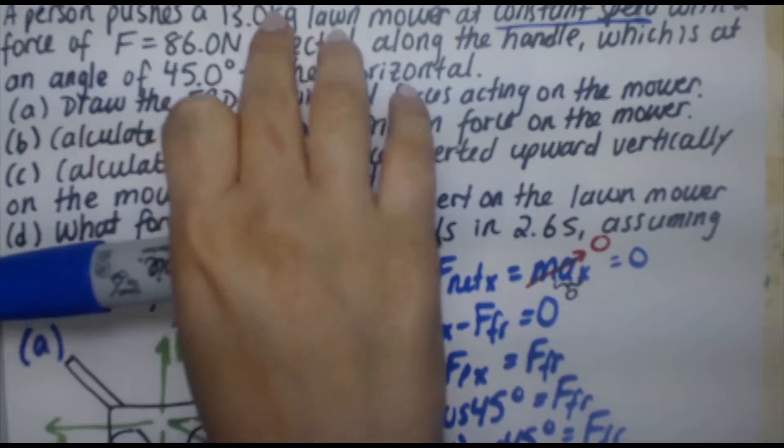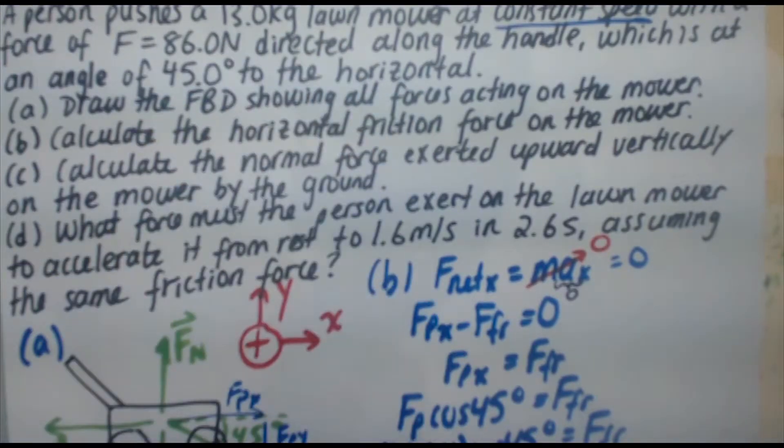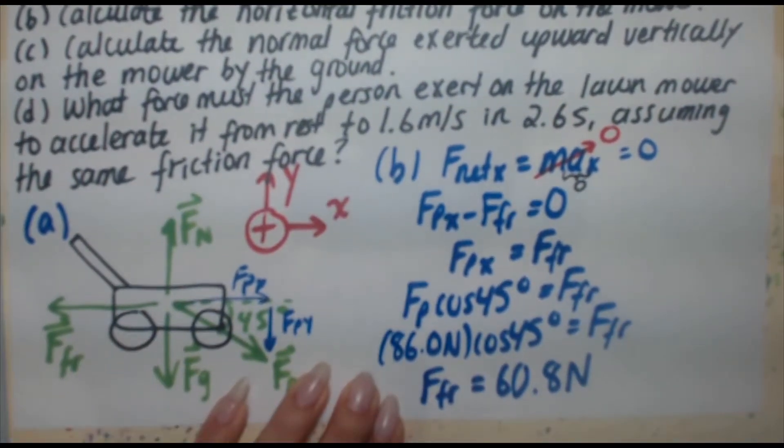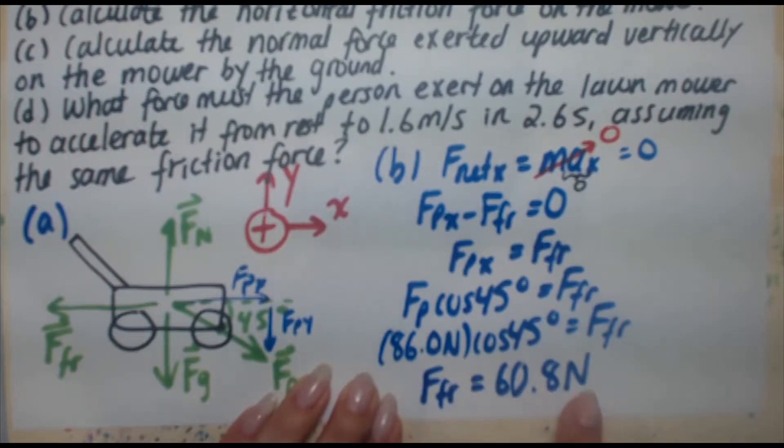But for the first part, we're given three sig figs, three sig figs, three sig figs. So in fact, we can give the answer to three sig figs, since we only use that data for this calculation.